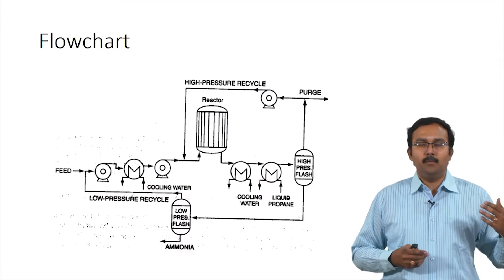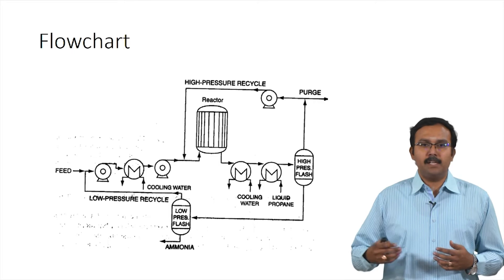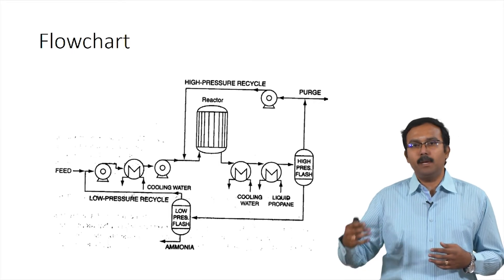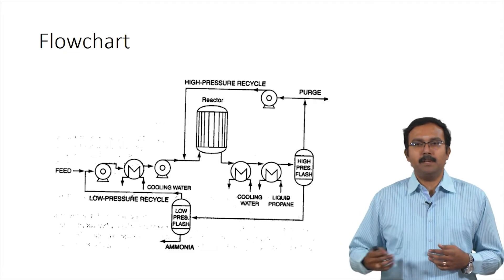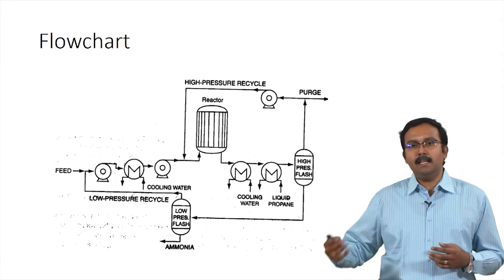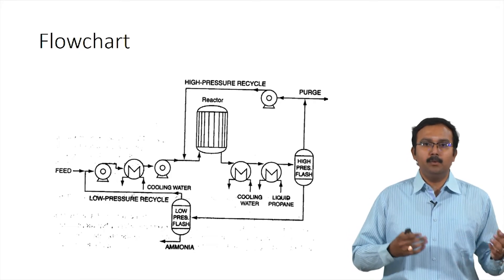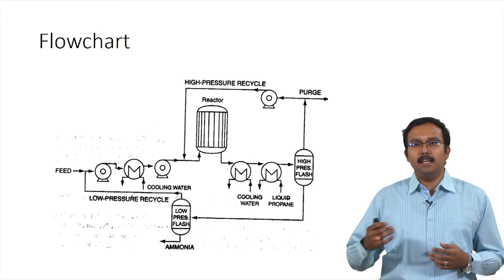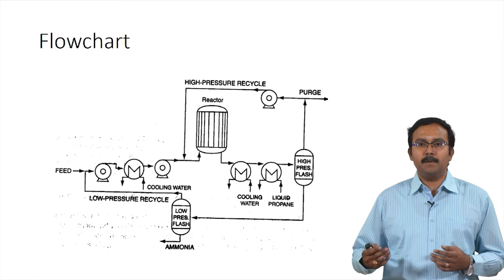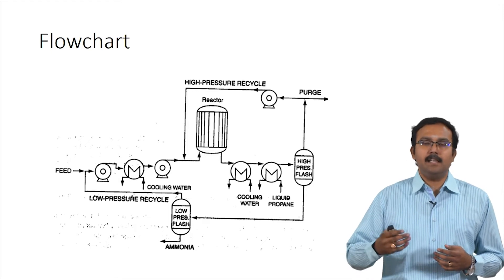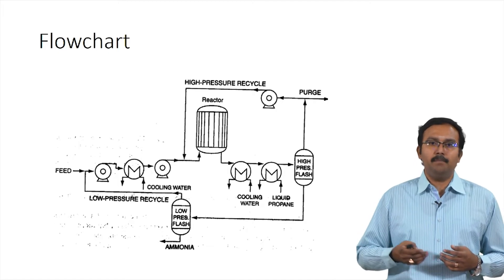Here is a flow chart where feed enters and gets mixed with a low pressure recycle, then gets pumped into a heat exchanger, then again pumped to be mixed with a high pressure recycle. The mixture enters a reactor, and the reactor product is cooled by two different heat exchangers. The exit of the heat exchanger enters a high pressure flash, and the products either get recycled or purged, with the recycle stream pumped to form the high pressure recycle.